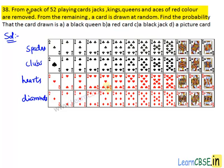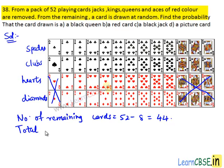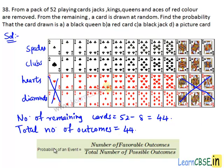In the question, it is given that from a pack of 52 playing cards, Jacks, Kings, Queens and Aces of red color are removed. That means these 8 cards are removed. Then we are left with 44 cards — number of remaining cards equals 52 minus 8, which equals 44. Hence, total number of possible outcomes equals total number of remaining cards, which is 44. We know that probability of an event is the ratio of number of favorable outcomes to total number of possible outcomes.